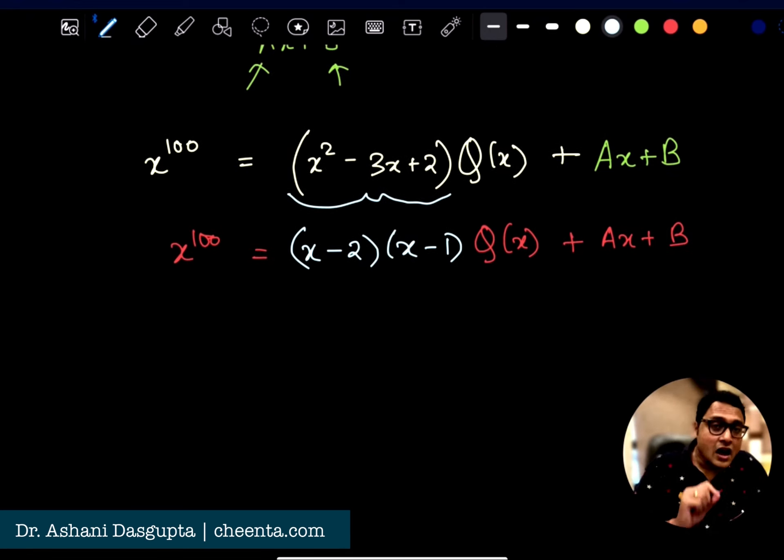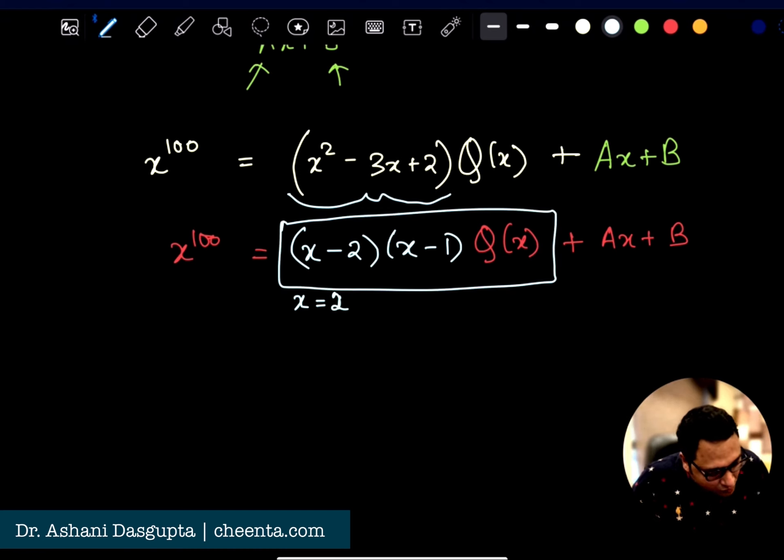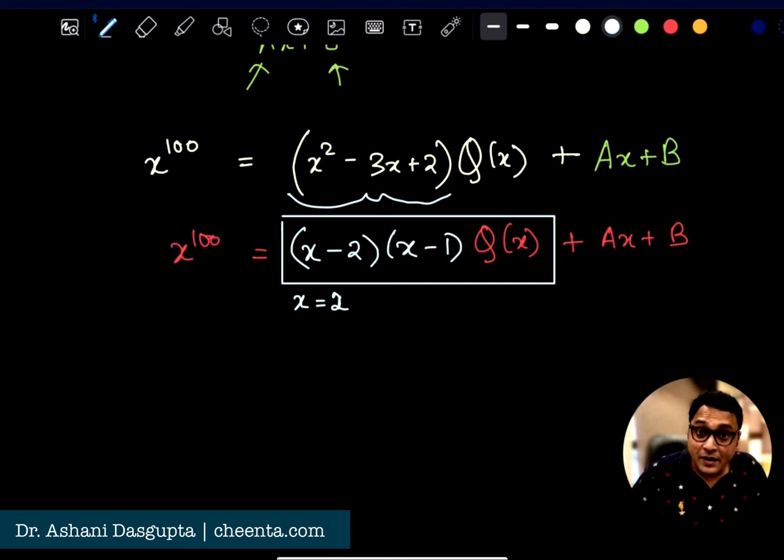We are almost there. Now, if we replace x by 2, this entire part becomes 0. So we have 2 to the power 100 equals 2a plus b.